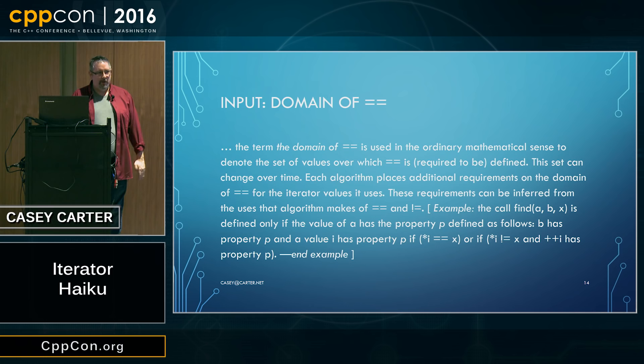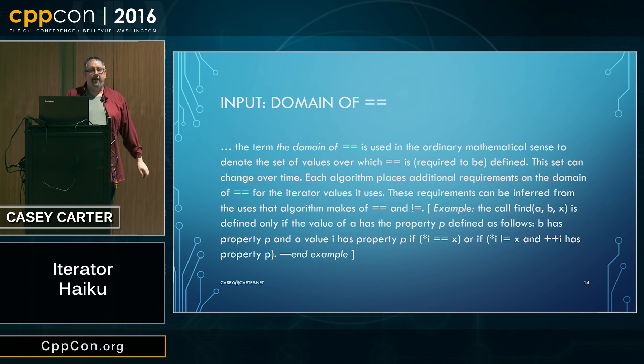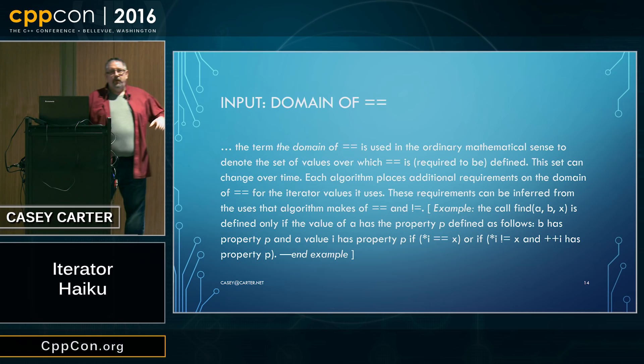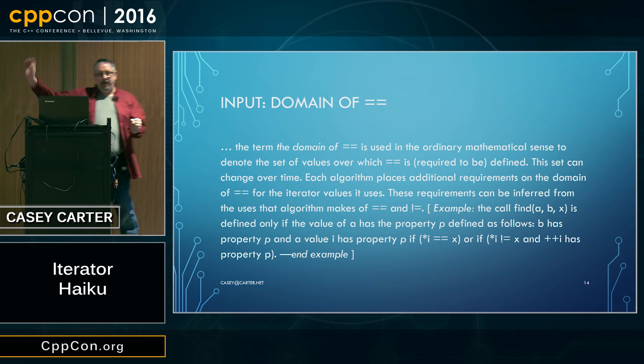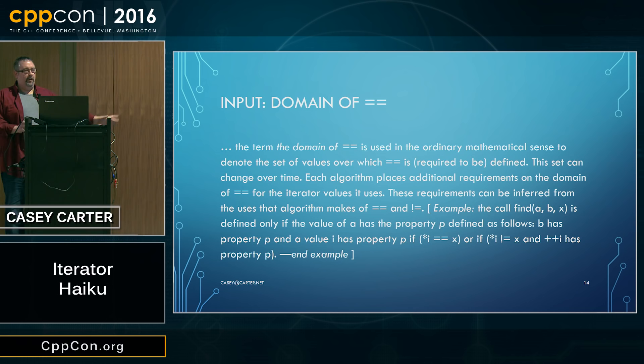This is obviously problematic because nobody has time to examine every algorithm in the standard, let alone every algorithm written by everyone who didn't contribute to it. The general rule we've come up with for input iterators is that there are essentially two values in an input range that we care about at any time: the current value and the end iterator. Once I advance the current value to the next thing, the old values are no longer in the domain of equality since input iterators are single-pass.